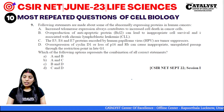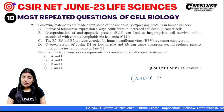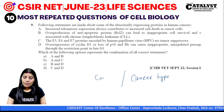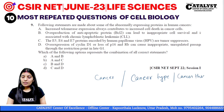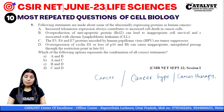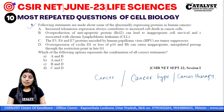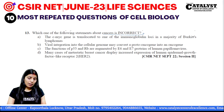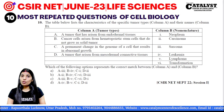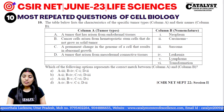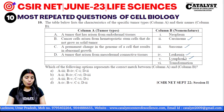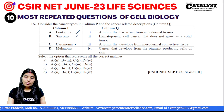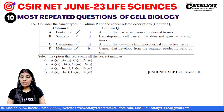The next two topics are cancer — cancer types and cancer therapy. In these topics, questions are very frequently repeated. You can see questions about abnormally expressed proteins in human cancers, and incorrect statements about cancer characteristics. Cancer types such as carcinoma, sarcoma, leukemia, lymphoma, and melanoma are repeatedly asked.